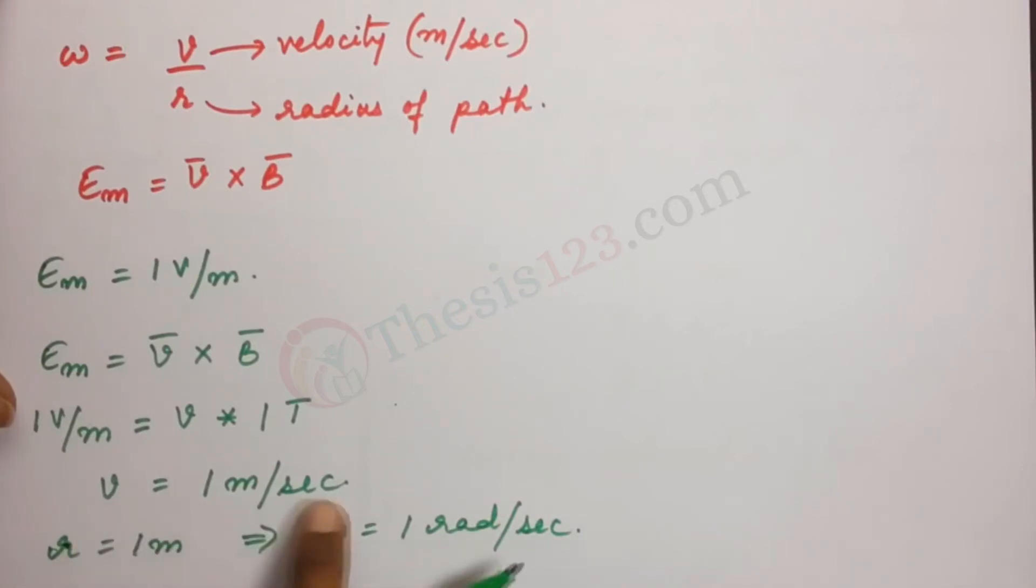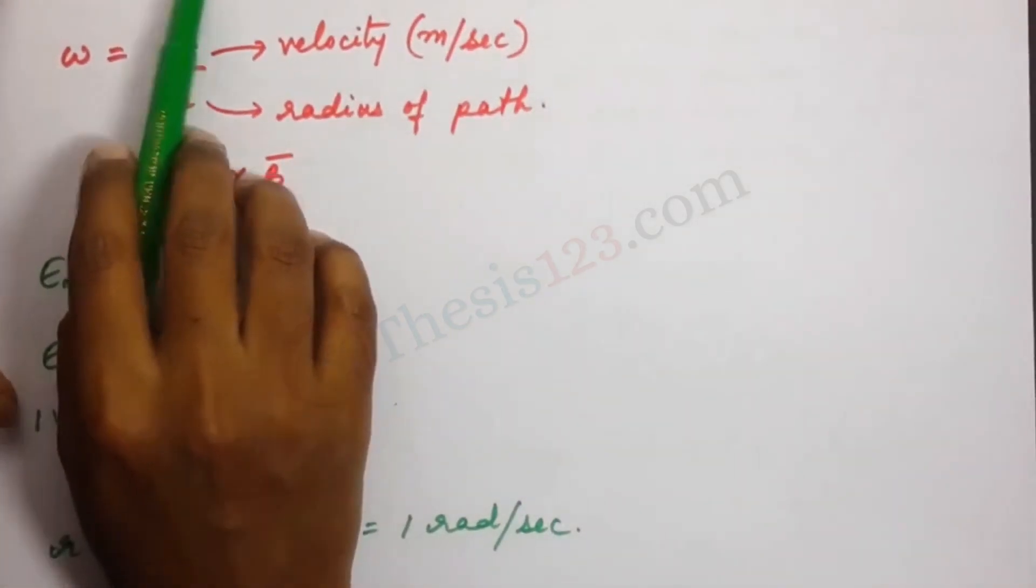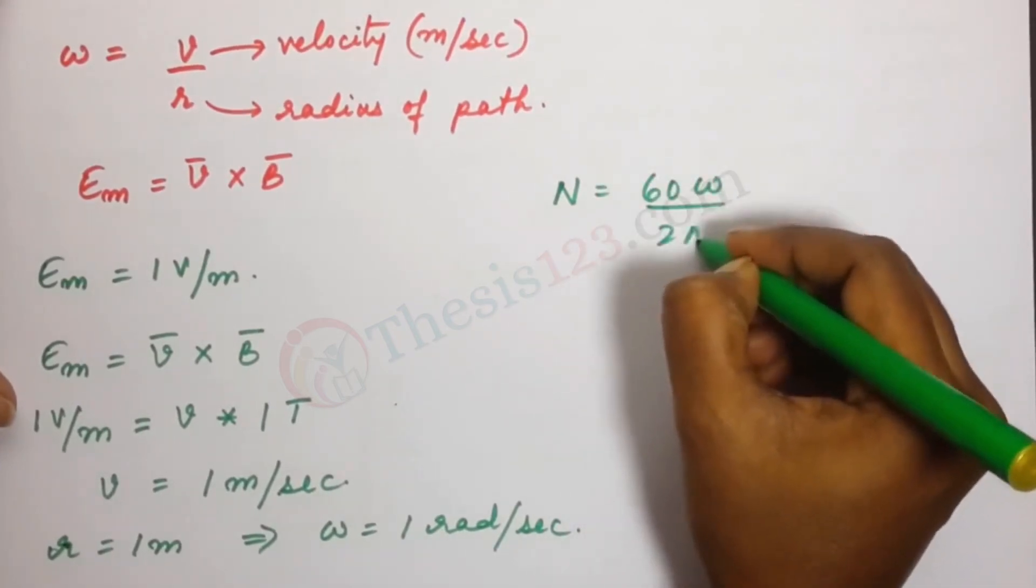If V is 1 meter per second and radius is 1 meter, that gives us omega of 1 radian per second. So we have omega, V, R. Now let's substitute. N equals 60 omega by 2 pi.